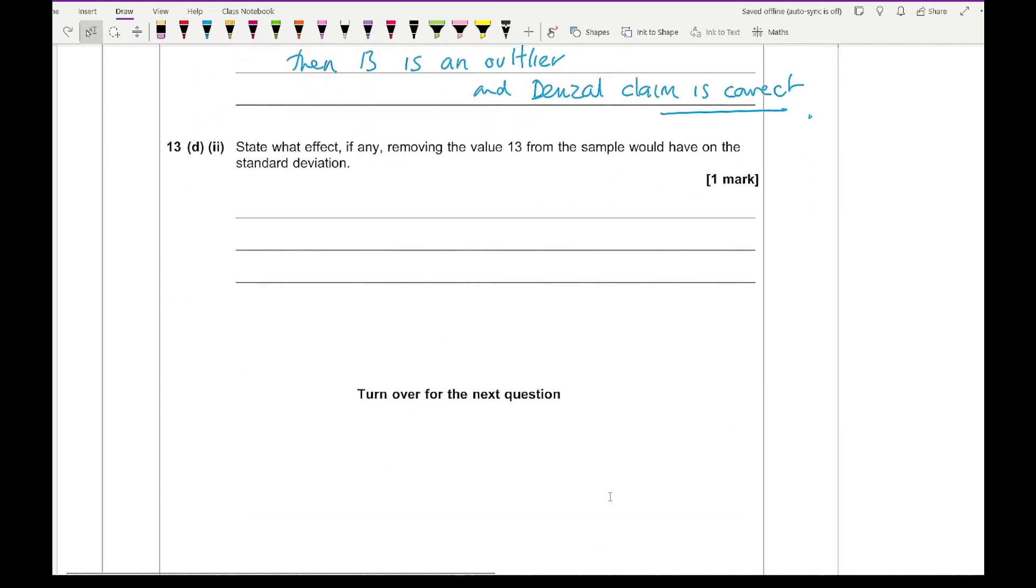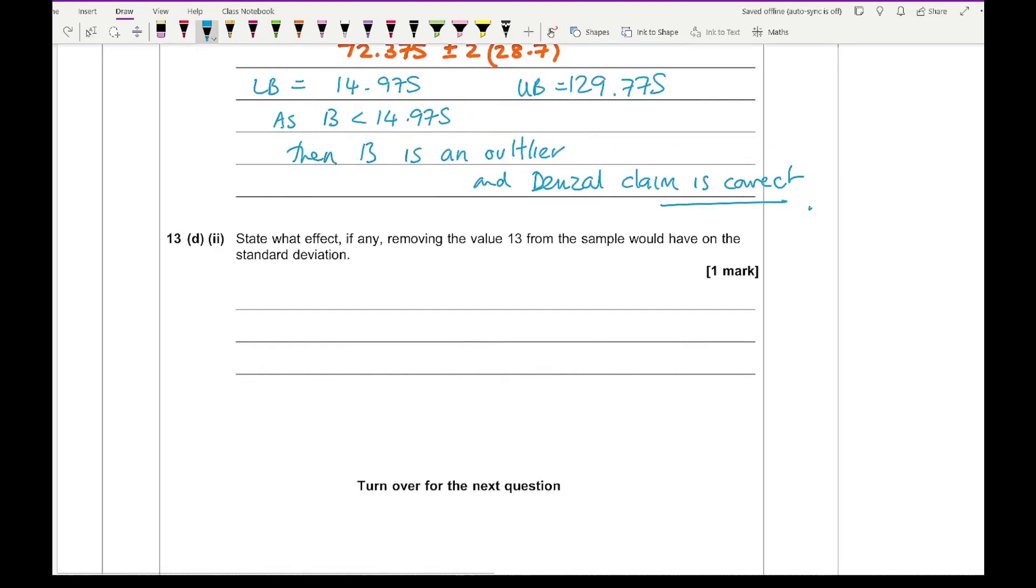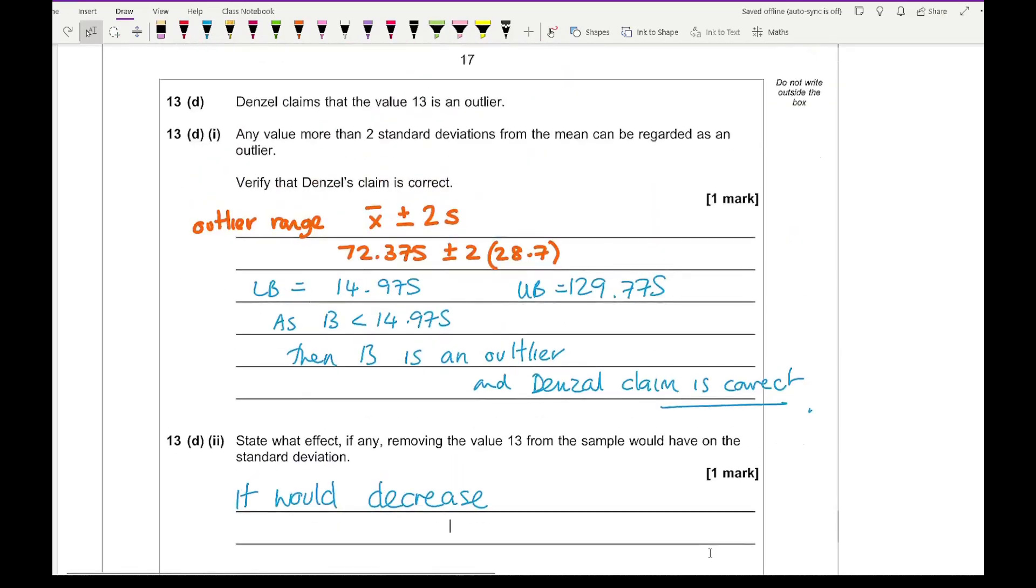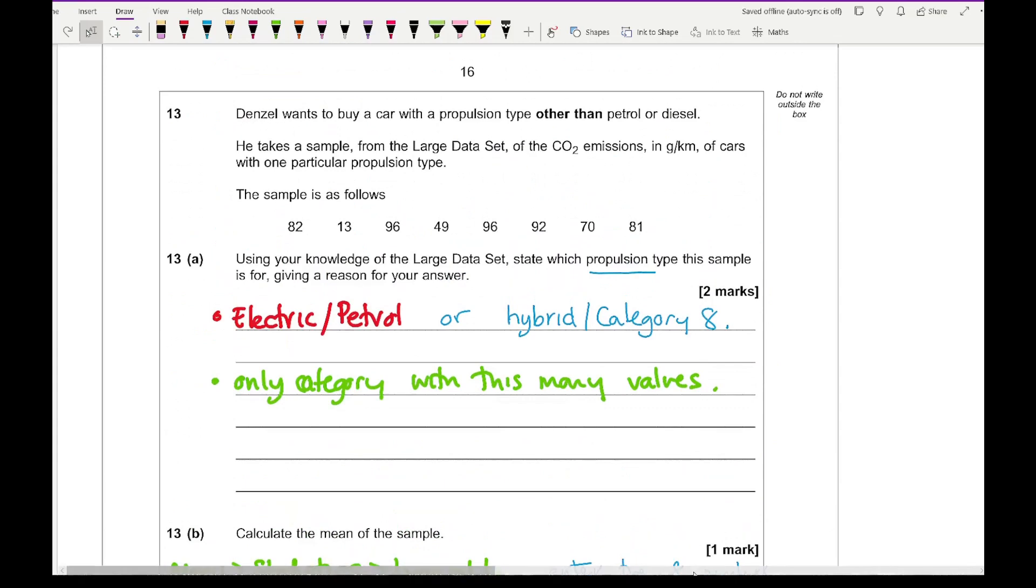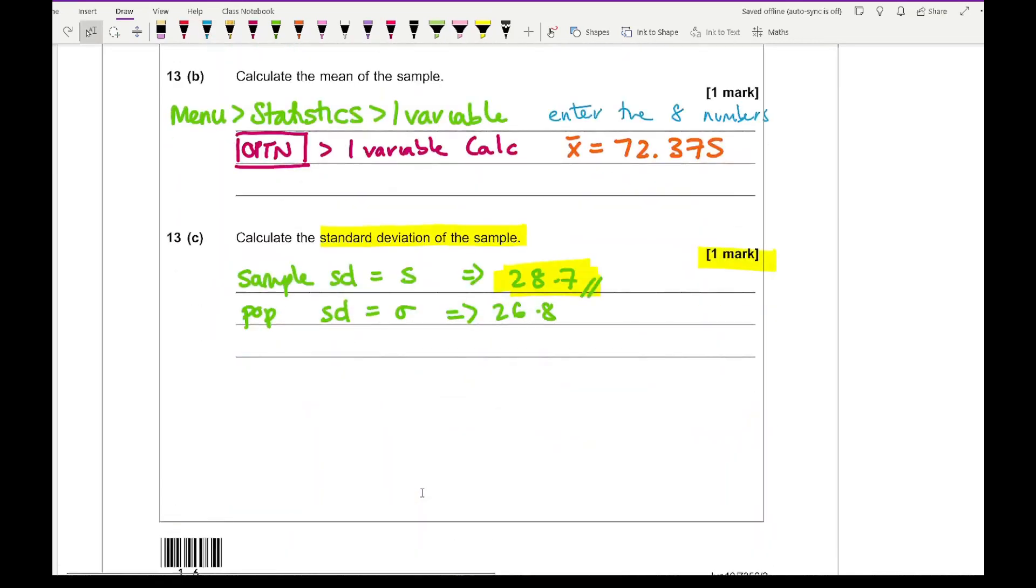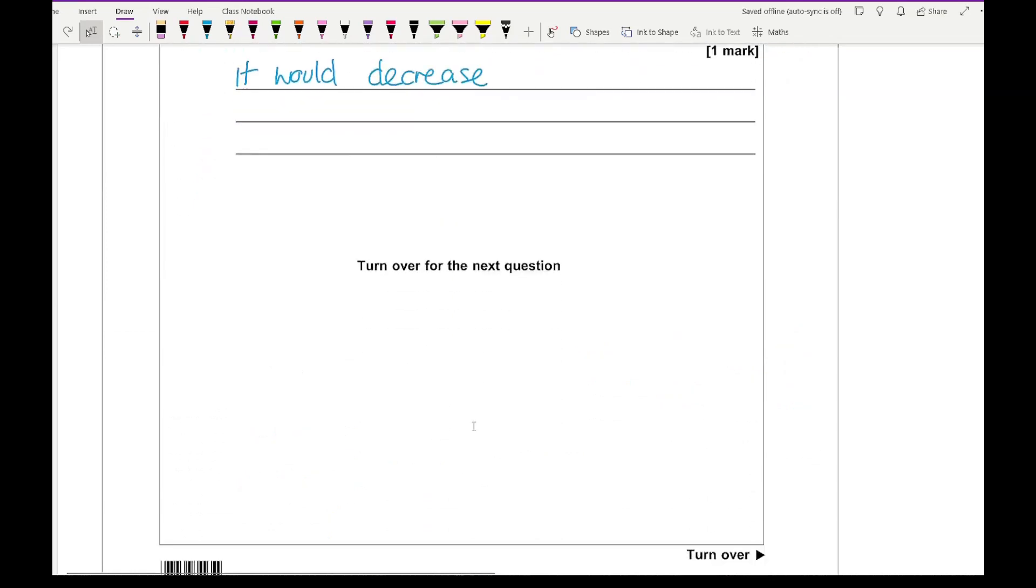It then says state what effect, if any, removing the value of 13 from the sample would have on the standard deviation. For this, what you want to write is that it would decrease. If you're not sure what happens to it, then all you need to do is simply on your calculator remove the number 13 from this data and then just calculate the standard deviation. Compare that to the 28.7 value you got for 13C and then just make a statement.